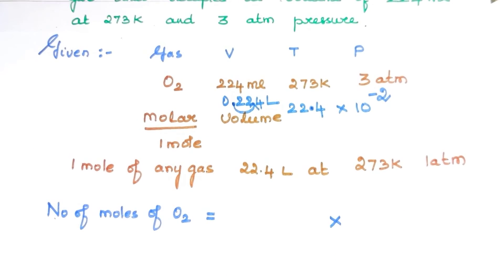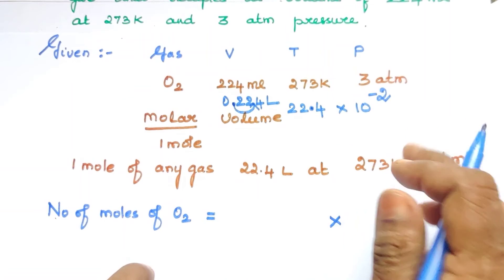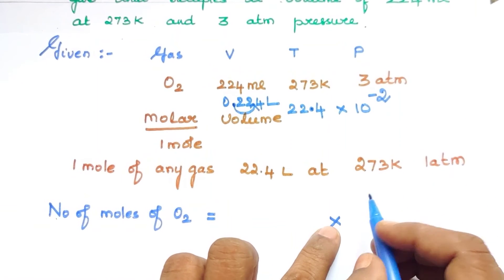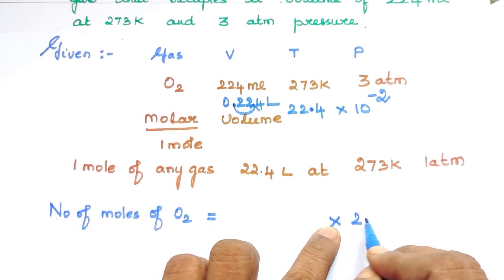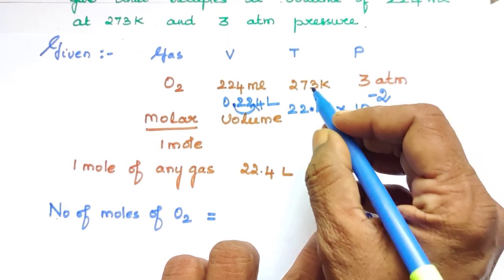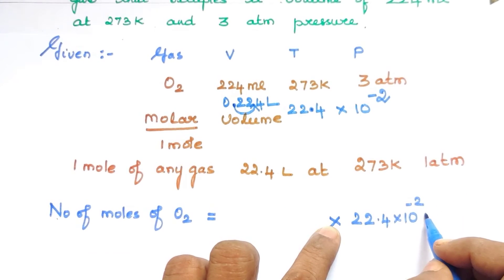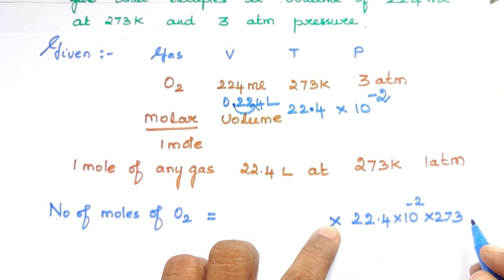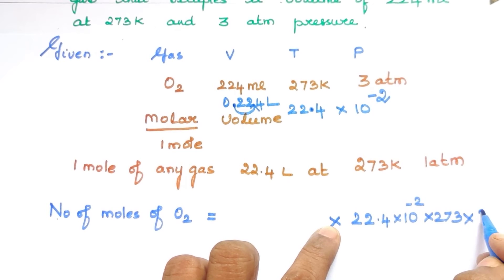Now look at the question. We are going to use 22.4 × 10⁻² liters (since 224 mL = 0.224 L = 22.4 × 10⁻² L). Temperature is 273 K and pressure is 3 atm.